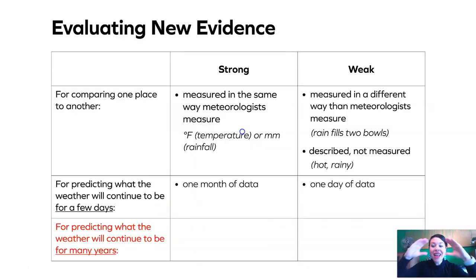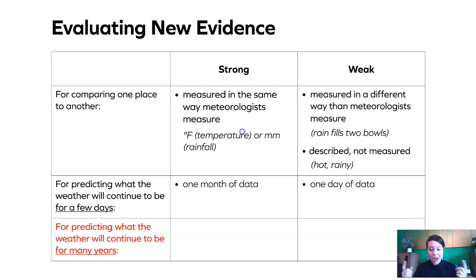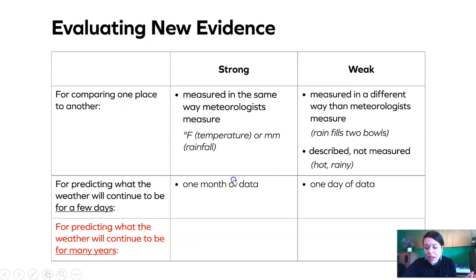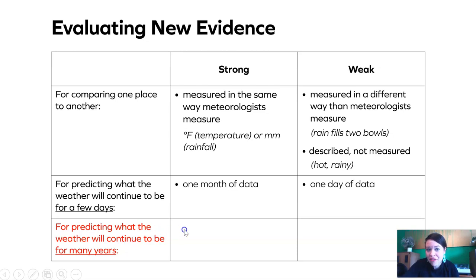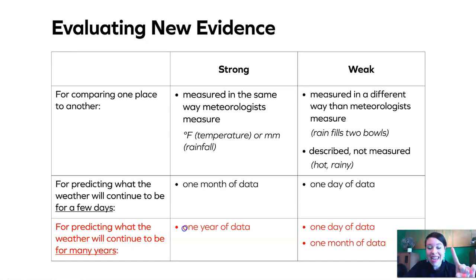We're going to add a new row to the bottom of the evaluating new evidence chart. In chapter two, we were predicting weather for the next few days, and a month of data let us do that. But now we want to predict what the weather will continue to be for years and years — for the orangutan reserve — so we need one year of data. Now, one day and one month are going to be weak evidence.